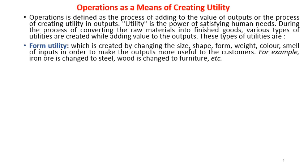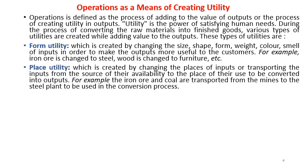The second type is place utility, which is created by changing the places of inputs — transporting inputs from the source of their availability to the place of their use to be converted into outputs. An example is iron ore and coal, which are transported from the mines to the steel plant to be used in the conversion process. There is a change in the place of input — transportation from one place to another.